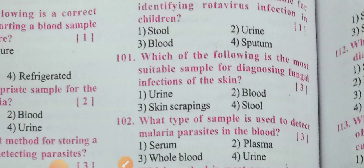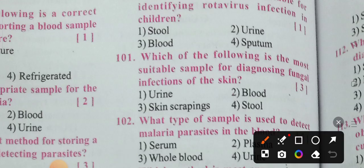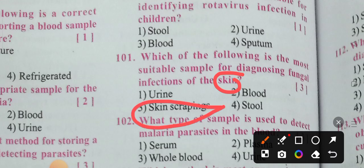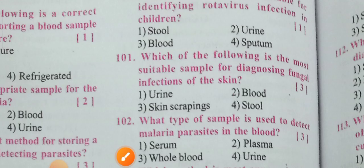Next: Which is the most suitable sample for diagnosing fungal infections of the skin — urine, blood, skin scrapings, or stool? Since this question is about fungal infections of the skin, the answer is obviously skin scrapings. Urine, blood, and stool are not related to skin. Option three — skin scrapings — is the correct answer.